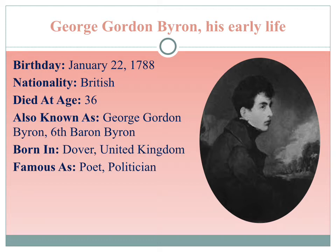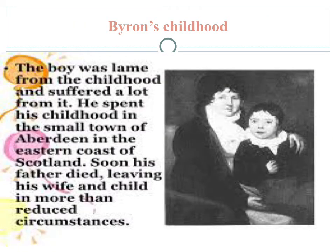George Gordon Byron had been born with a club foot and early developed an extreme sensitivity to his lameness. In 1798, at the age of 10, he unexpectedly inherited the title and estates of his great-uncle William, the fifth Baron Byron. His mother proudly took him to England, where the boy fell in love with the ghostly halls of Newstead Abbey, which had been presented to the Byrons by Henry VIII. After leaving Newstead for a while, Byron was sent to school in London, and in 1801 he went to Harrow, one of England's most prestigious schools.